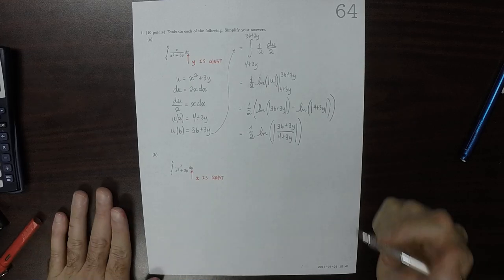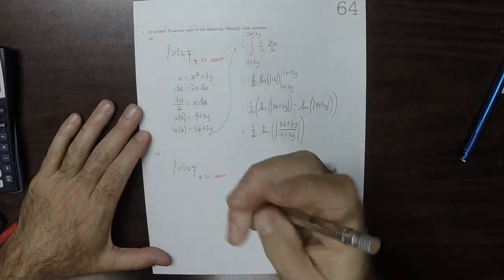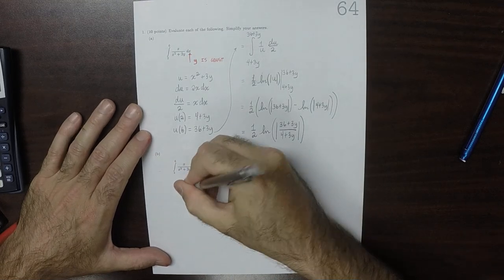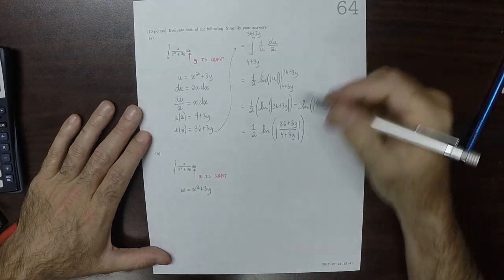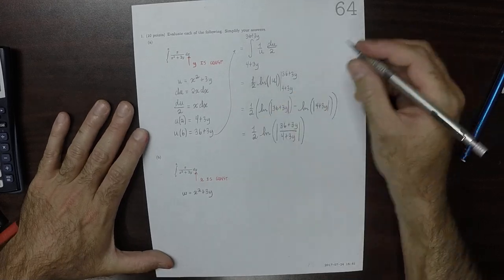So we can do a substitution again. How about w is x squared plus 3y. So same substitution except now a different variable. A different symbol is the variable now.